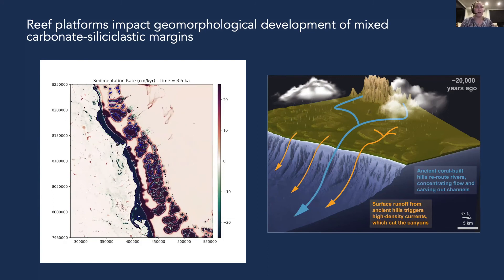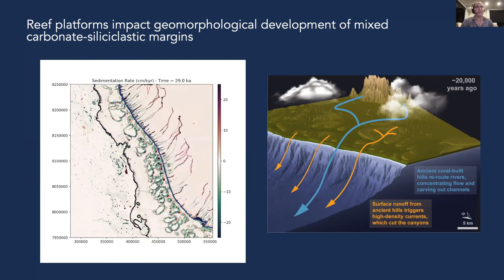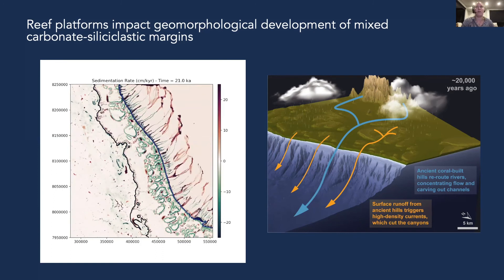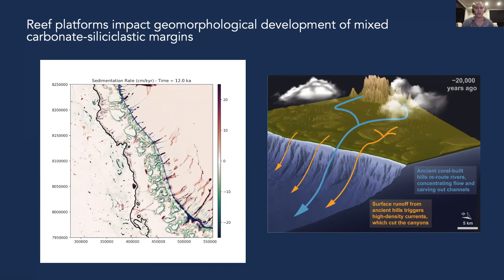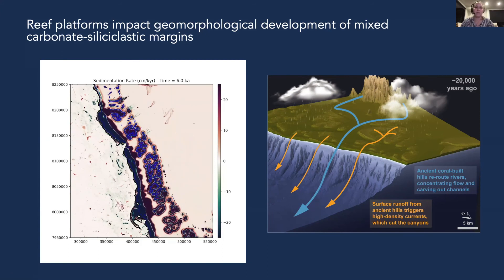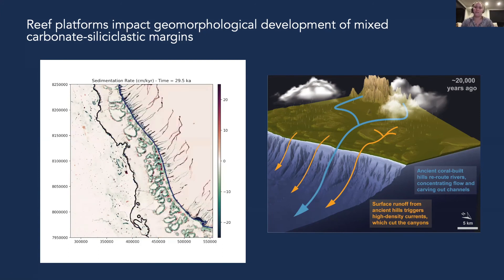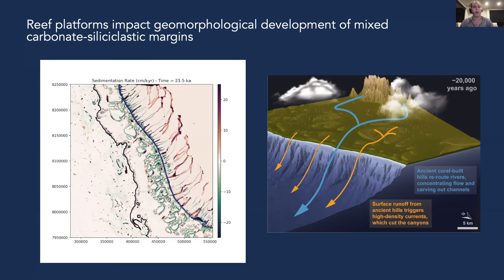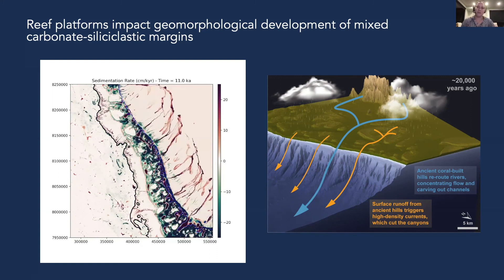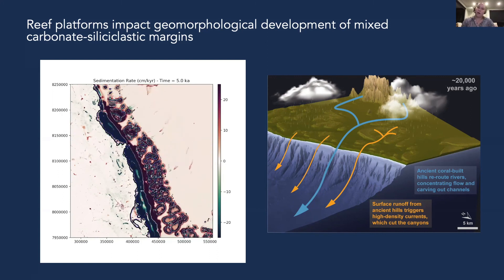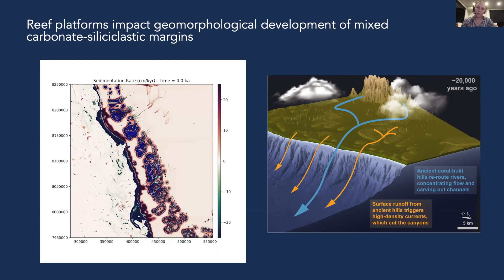We also found that reef platforms instigate more turbidity currents on the slope and help carve out canyons, which are actually visible in the animation here. These findings would have been impossible without the recent developments in Badlands, and I found it quite remarkable that these very tiny organisms could have such a profound impact on submarine landscapes.